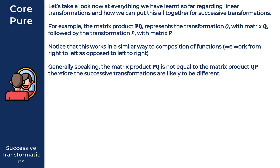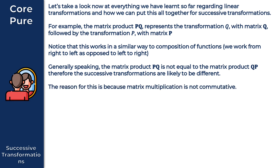Keep that in mind as you work through these types of questions on successive transformations. The reason for this is that matrix multiplication is not commutative — just a basic property of matrices. That gives us everything we need for our introduction to successive transformations. We're not introducing any new theory; we're largely building on everything we've seen so far for linear transformations. Let's now take a look at two examples.